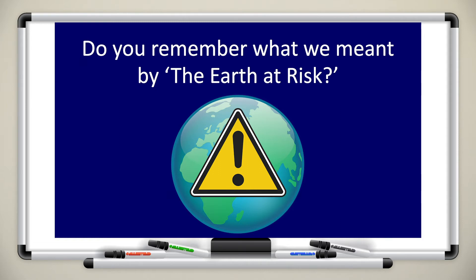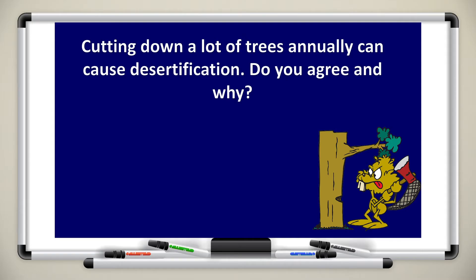In episode 16 we covered the earth at risk. We discussed how pollution, desertification, deforestation, and global warming are affecting the earth. Here is one more question: cutting down a lot of trees annually can cause desertification.